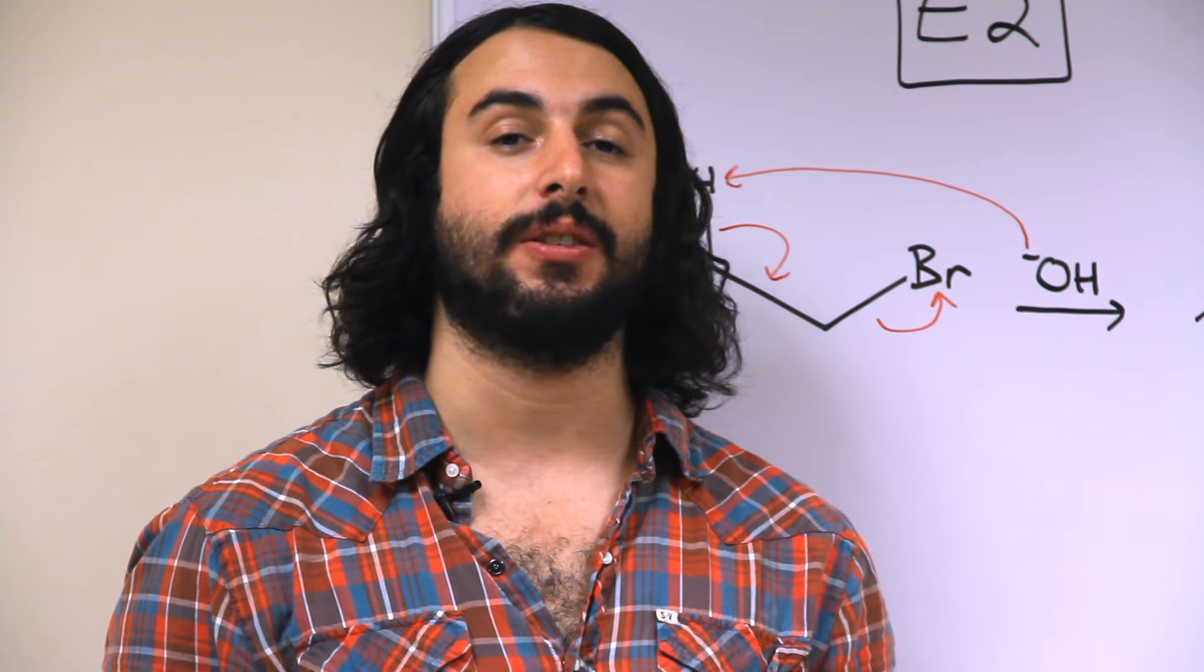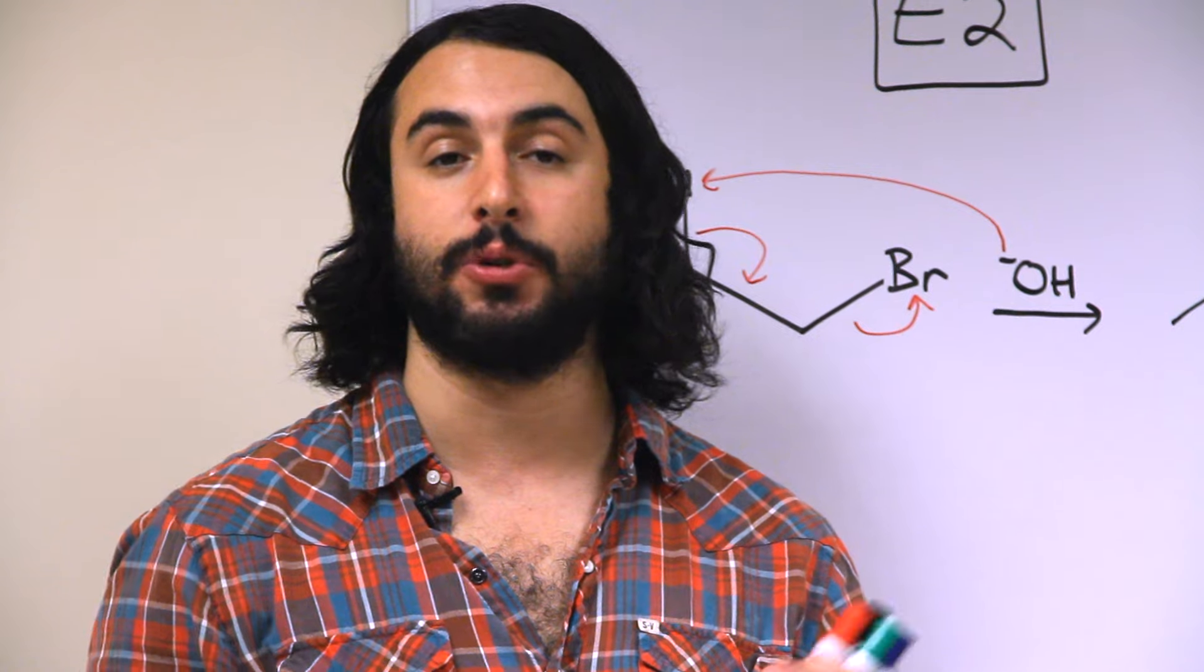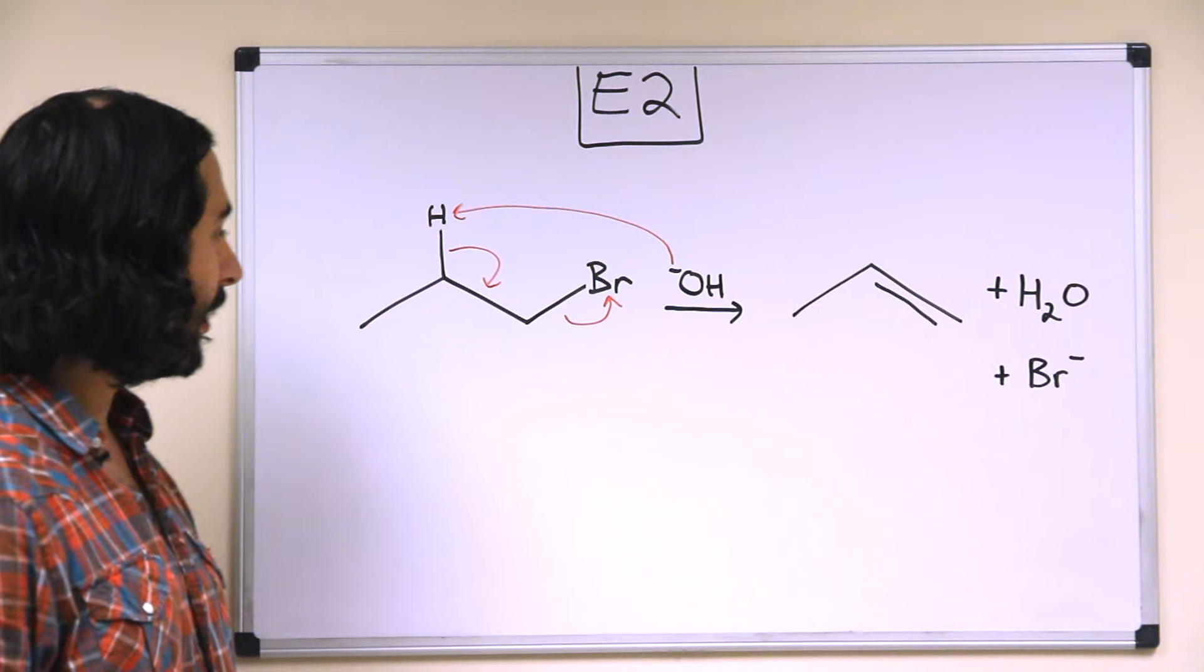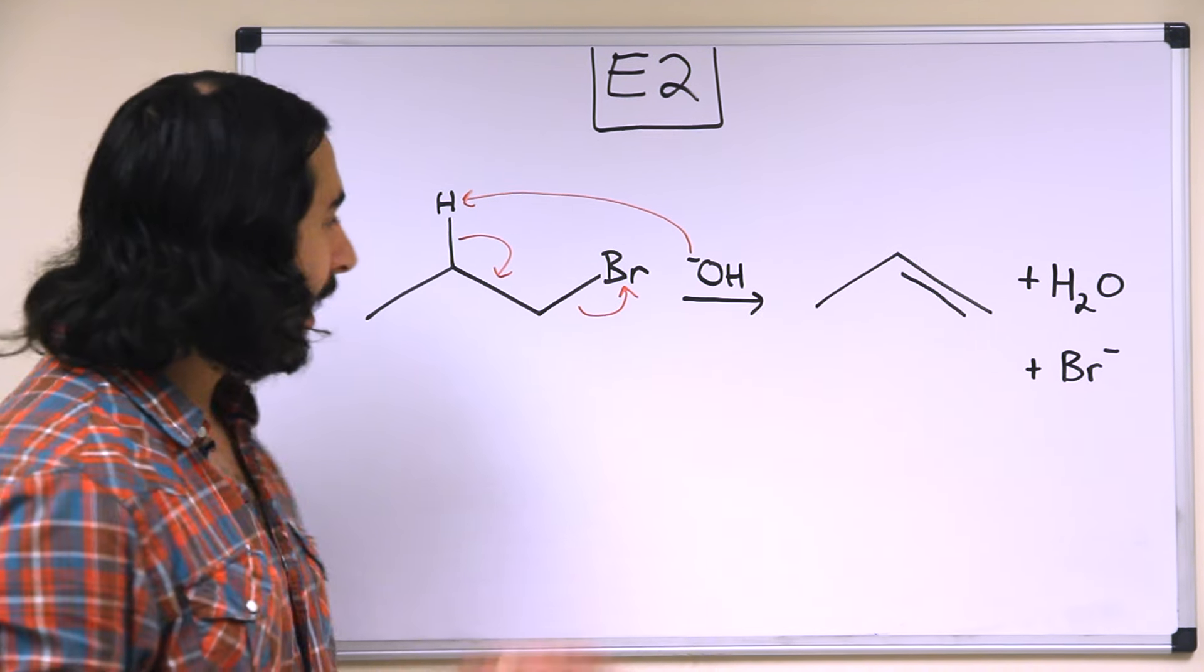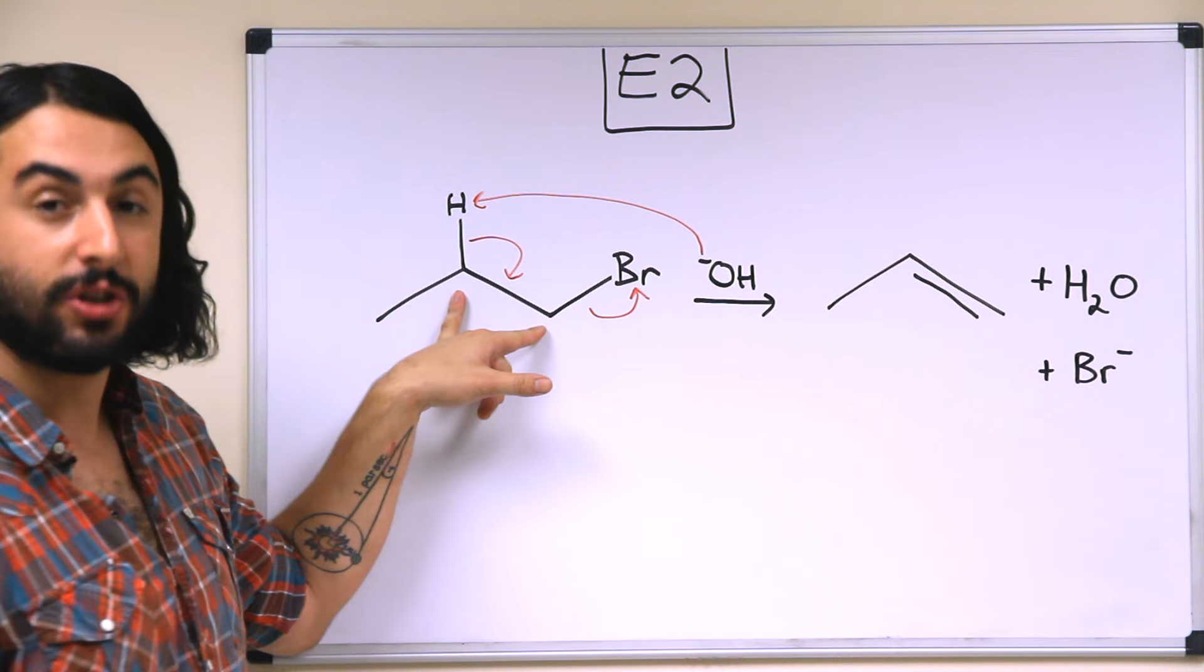So in any elimination reaction, two groups from adjacent carbons are removed and replaced by a double bond between those two carbons. So let's take a look. Here's just a bromopropane, and so here is a hydrogen and here's the bromine. These are the two adjacent carbons.